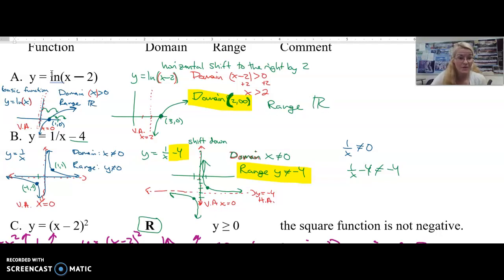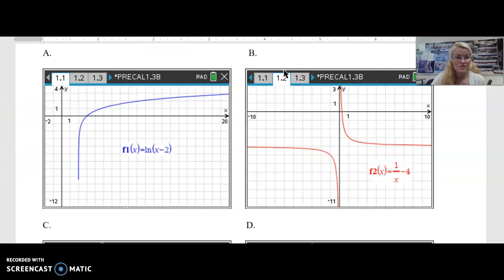The range still stays all real numbers. Now when you do your homework, I'm expecting you to just straight up graph it, and you'll see, oh look, the domain. There's this vertical asymptote here at 2, right? For part b, the hyperbola that's been shifted down 4, you can see 1, 2, 3, 4. Oh look, there's my new horizontal asymptote at y equals negative 4. So my range is all y values except negative 4.